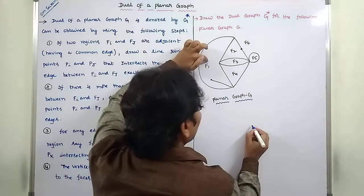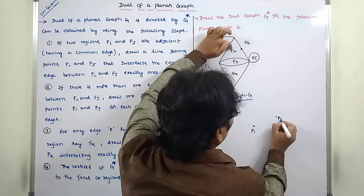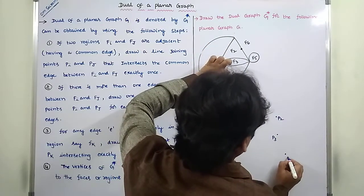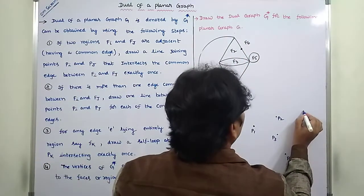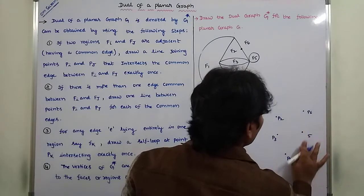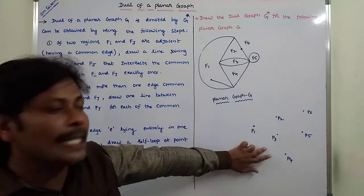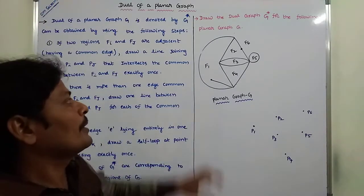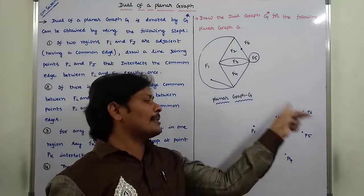So now, F1 corresponding point is P1, F2 corresponding point is P2, F3 corresponding point is P3, F4 corresponding point is P4, F5 corresponding point is P5, F6 corresponding point is P6. So how many number of vertices are there in G star? 6 vertices are there: 1, 2, 3, 4, 5, 6. The total number of vertices present in G star is 6.